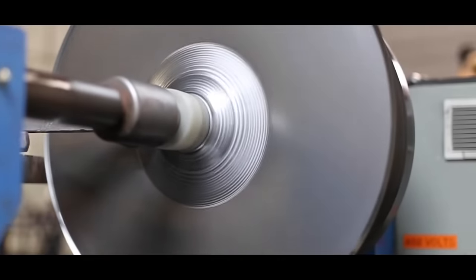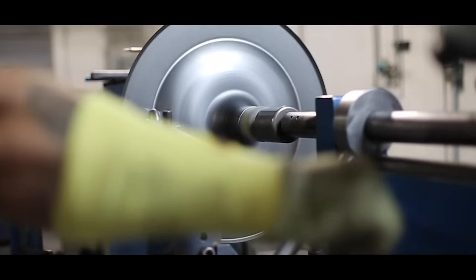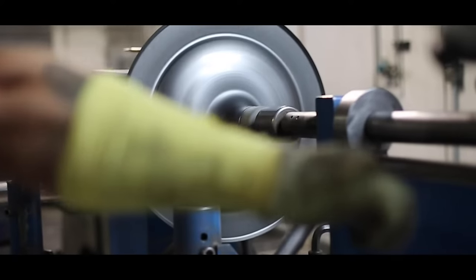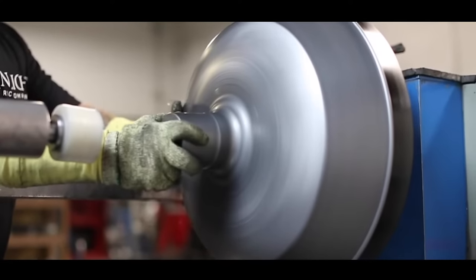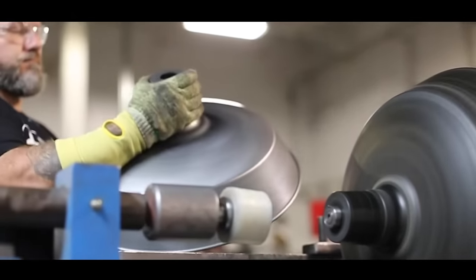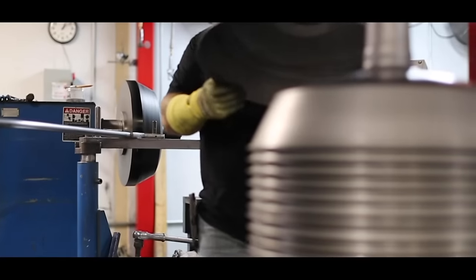A round steel disc is hand spun at high speeds and high pressure on a spinning lathe. The fixture is artfully crafted by hand until the metal assumes the desired shape. This process dates back to historic lighting manufacturers from the early 1900s and ensures that every shade is made with meticulous attention to detail.